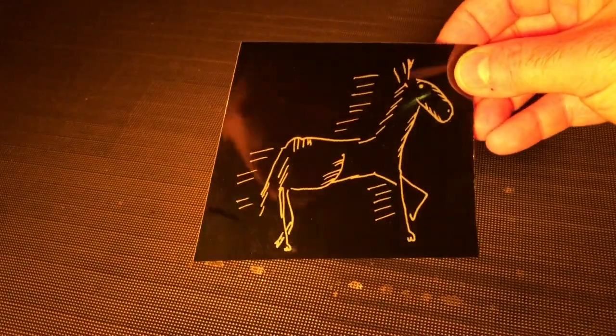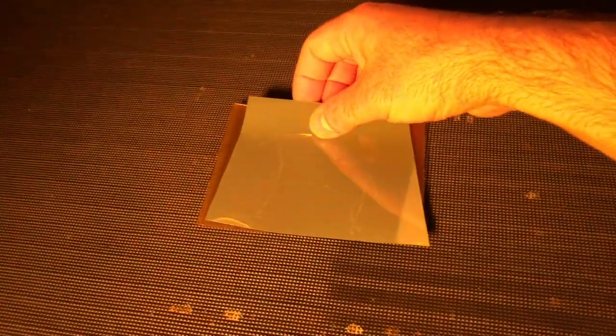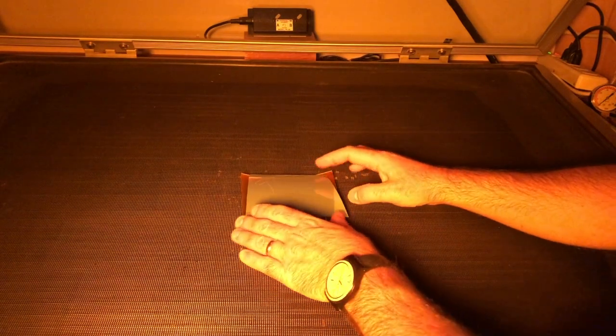Here's a close-up view. There's our negative. We're flipping it over so we can see the back, and we lay it down on the plate. It's much easier with two hands.